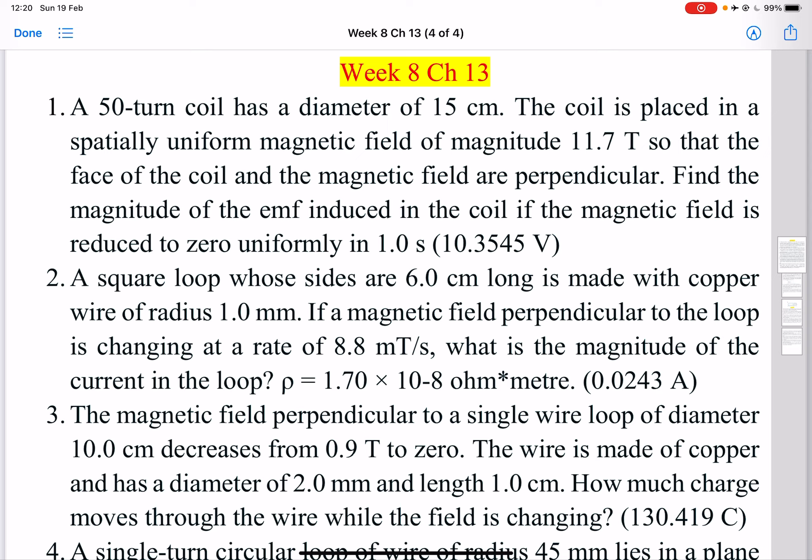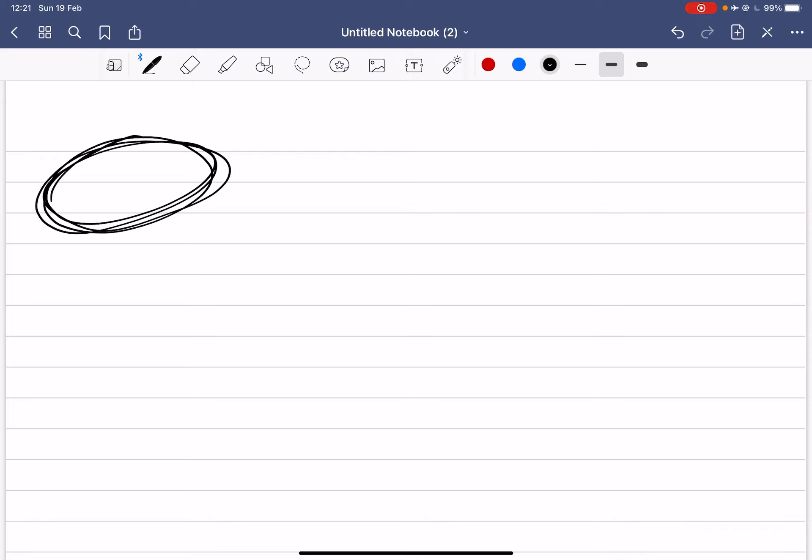Okay, so basically it is a coil, so it's like this coil, and it has number of turns 50. It has a diameter of the coil which is 15 centimeters.